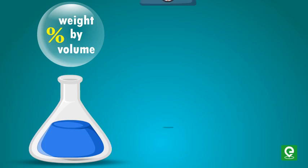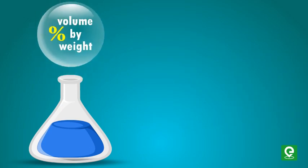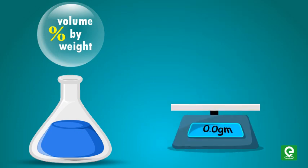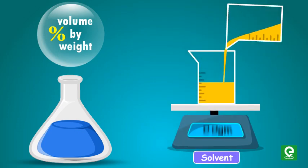Percent weight by volume: if we express amount of solute in weight and amount of solution in volume, we write concentration as percentage weight by volume. Percent volume by weight: conversely, expressing solute in volume and solution in weight is defined as percentage volume by weight.